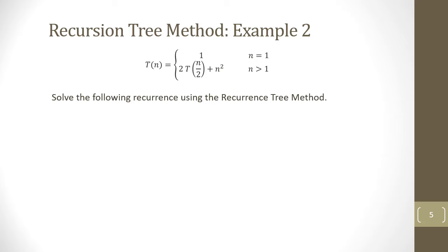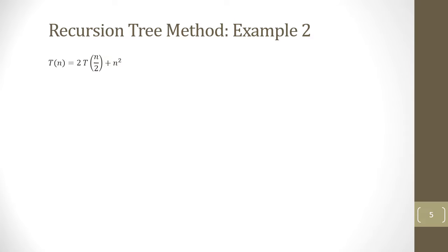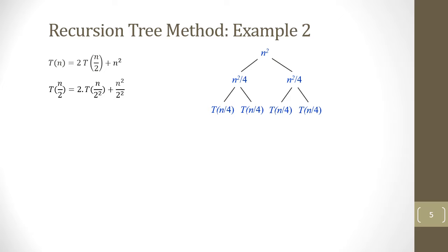Now let's look at another example. Here we have n² instead of n in the non-recursive part. We assume n is an exact power of 2 since the problem is divided into 2 equal halves each iteration. We draw the recursion tree: n² is the non-recursive part at the root, and since we have 2T(n/2), we have two children of T(n/2). To find T(n/2), we plug n/2 into the recurrence equation and then continue to find T(n/4) by plugging n/4 into the original recurrence.